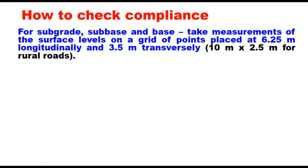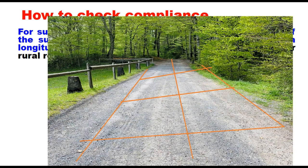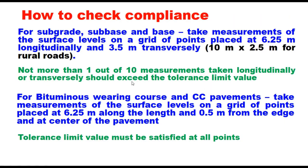How do we check the compliance? For subgrade, subbase, and base, we take measurements of the surface levels on a grid of points placed at 6.25 meter longitudinally and 3.5 meter transversely. This grid is at 10 meter by 2.5 meter for rural roads. We make a grid on the base, subgrade, and subbase layer where the length is 6.25 meter and width is 3.5 meter for a highway, and 10 meter by 2.5 meter for rural roads. Not more than 1 out of 10 measurements taken longitudinally or transversely should exceed the tolerance limit value.